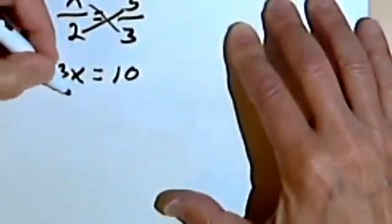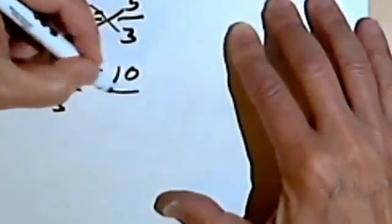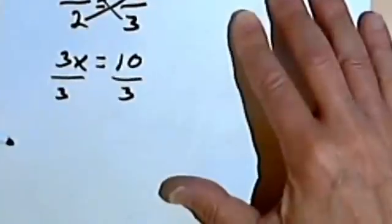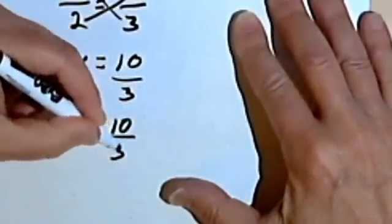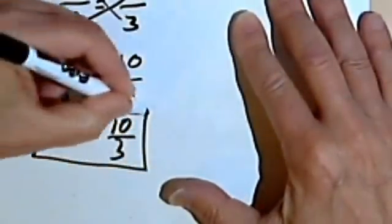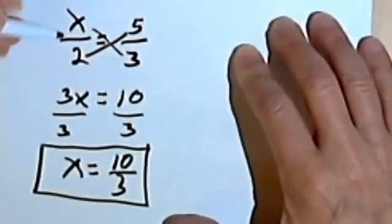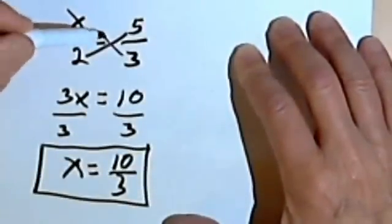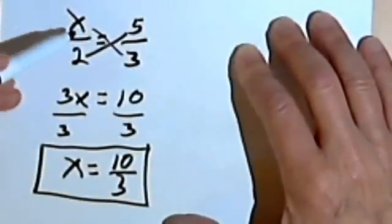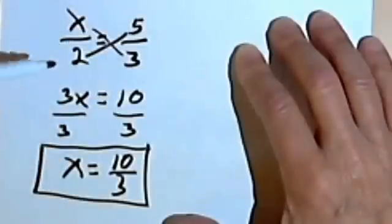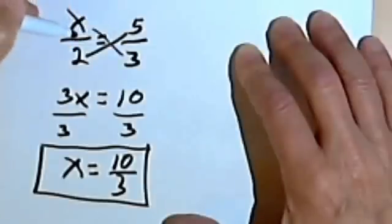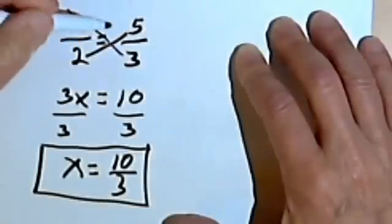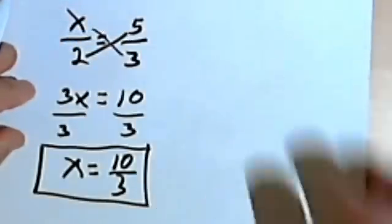And now I just want to isolate this x, so I'll divide both sides by 3. And that will give me x equals 10 thirds. Okay? So remember, if you want to cross-multiply, first of all, make sure you've got an equation, and second of all, make sure that you've got a fraction on each side of the equation and nothing else. Just two fractions, one on each side of the equation. And that's it.